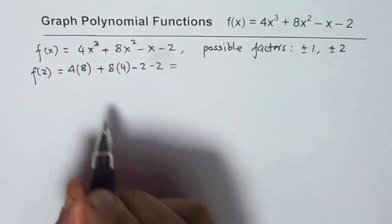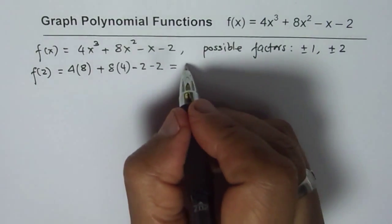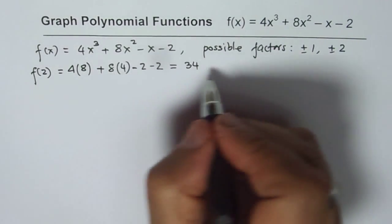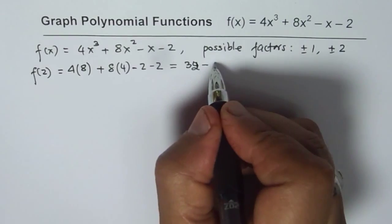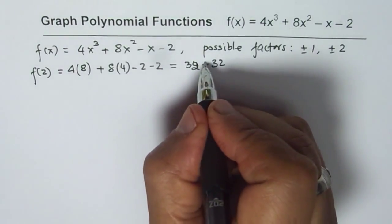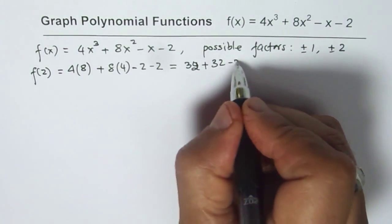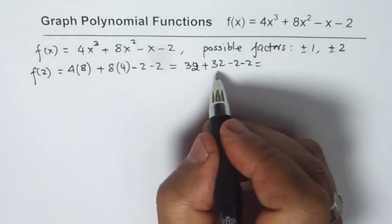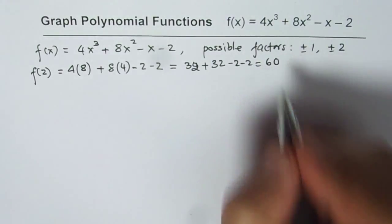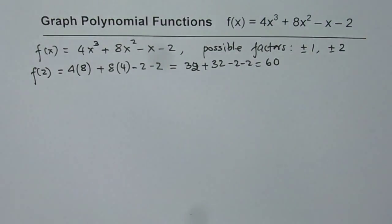And that gives us a value of 32, 8 times 4 is 32. Again 32 with a plus sign and minus 2, minus 2. 64 minus 4 is 60. So f of 2 is 60.